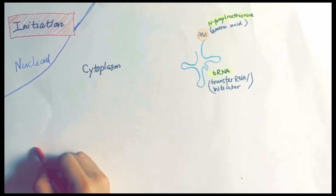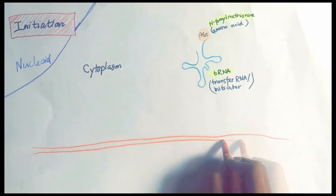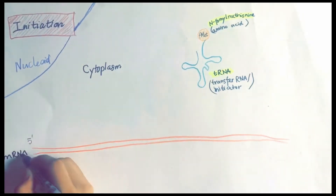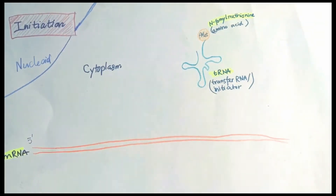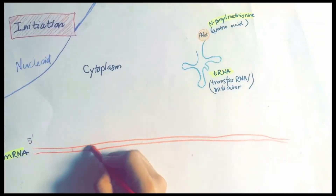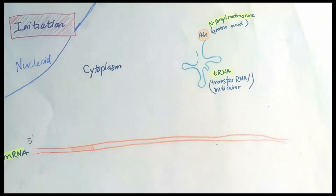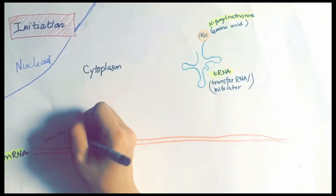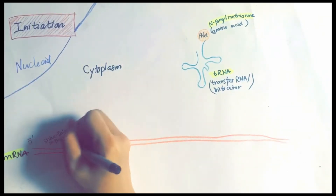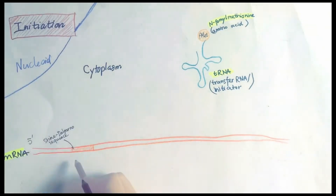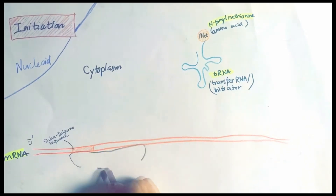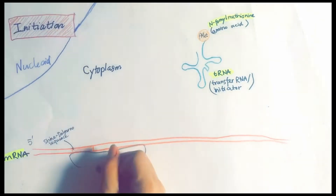The formation of this complex requires the participation of three initiation factors: IF1, IF2, and IF3. First, IF1 and IF3 bind to the 30S subunit, preventing the binding of the 50S subunit.